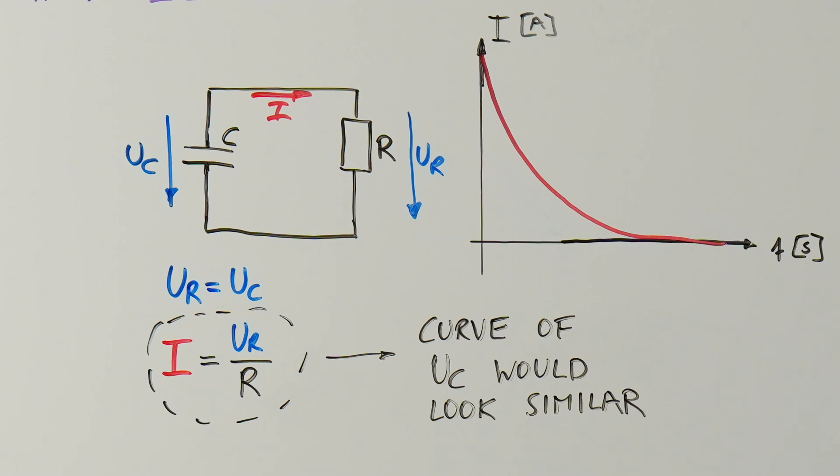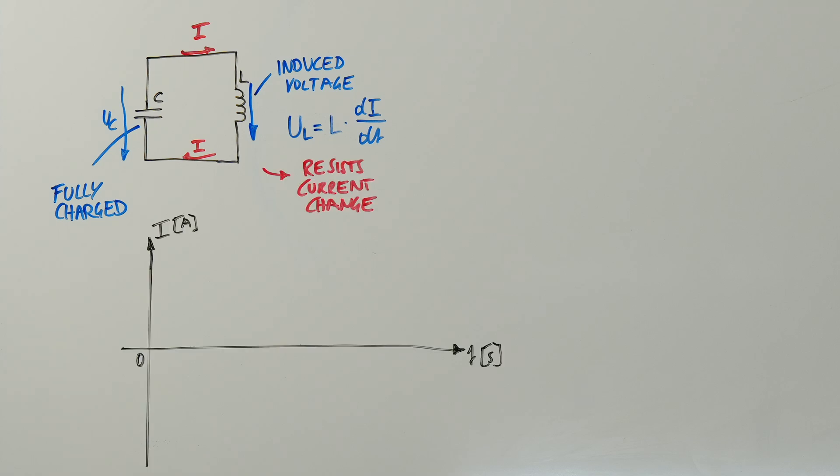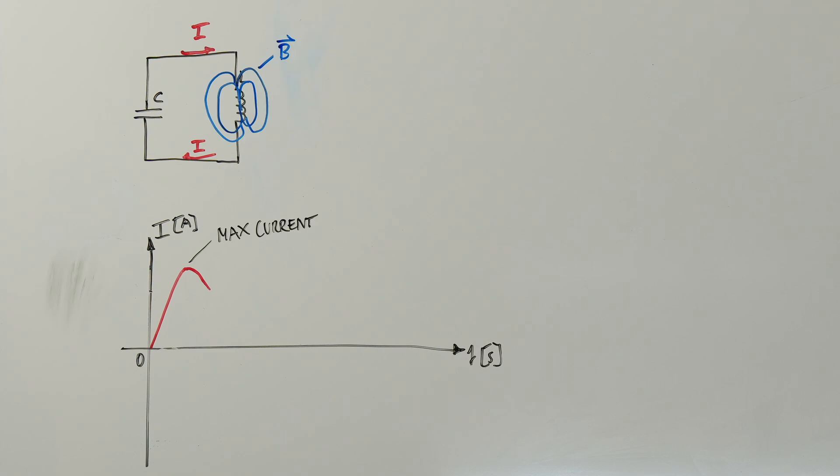Now, let's consider what happens if we replace the resistor with an inductor. The capacitor has a maximum voltage at the beginning and wants to create a maximum current. However, the inductor resists changes in current and induces a voltage in the opposite direction. Therefore the current only slowly rises. The inductor builds up its magnetic field until the current reaches its maximum. Then it decreases as the capacitor empties.